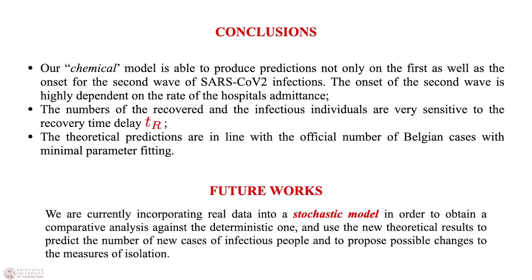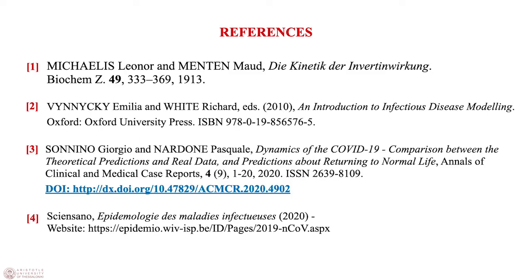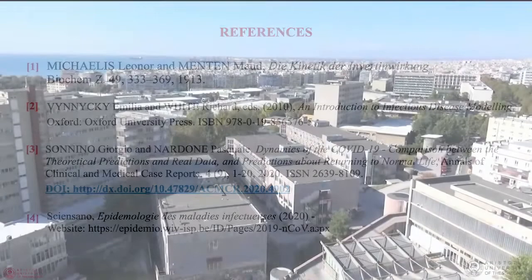So our conclusions are the following: our chemical model is able to produce predictions not only for the first but also for the second wave of SARS-CoV-2 infection. These numbers are very sensitive to several parameters in particular to recovery time in the late year. Our future work will consist in proposing a stochastic model in order to obtain a comparative analysis against the deterministic one. Here you can find the references which have been taken into account.